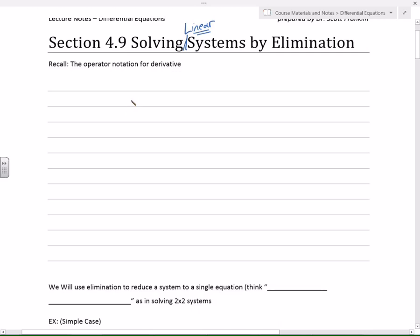So recall the operator notation for the derivative. That is, when we write Dy, we mean the same thing as y prime or dy/dt. I want us to use this notation right there. And like D squared y is the same thing as y double prime or d squared y dt squared. So I'm going to use this notation because it becomes the easiest form to accomplish this elimination.